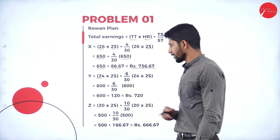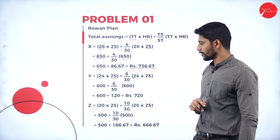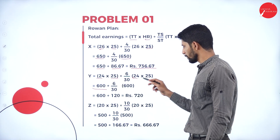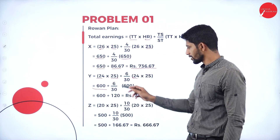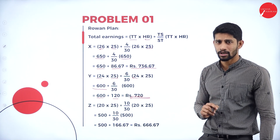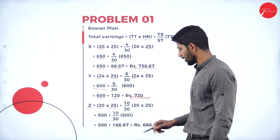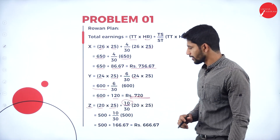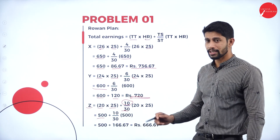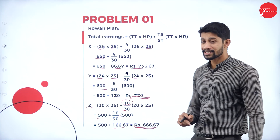Next, Mr. Y under Rowan Plan: 24 × 25 = 600, plus (6 ÷ 30) × 600 = 120. So 600 plus 120 equals 720 rupees. Next, Mr. Z: 20 × 25 = 500, plus (10 ÷ 30) × 500 = 166.67. Total comes to 666.67 rupees for Mr. Z under Rowan plan.